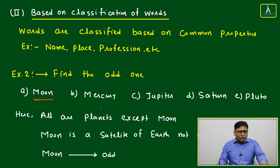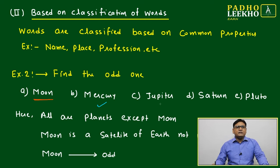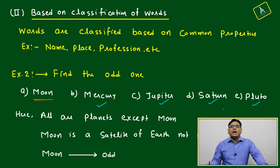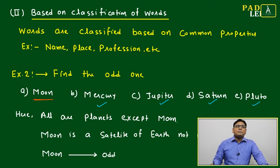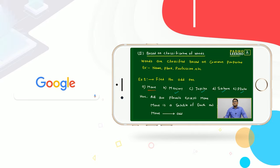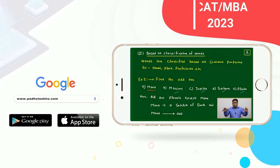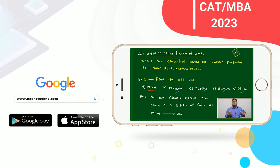The remaining four — mercury, jupiter, saturn, and pluto — are all planets. So all four are planets, not satellites. Although all five are heavenly bodies, out of the five, four are planets and one is a satellite. That makes moon the odd one out.